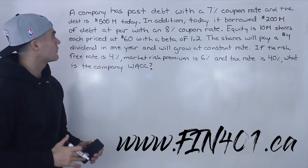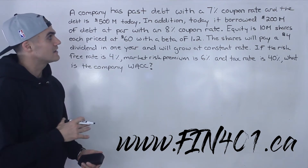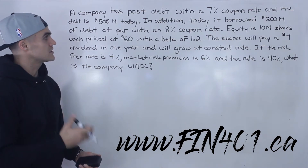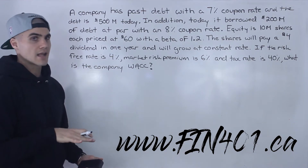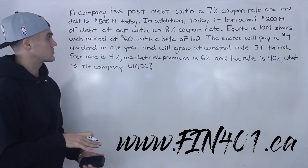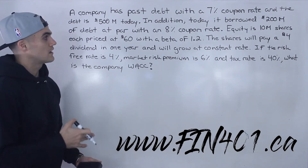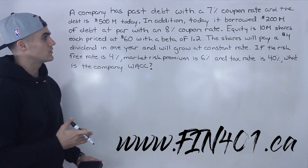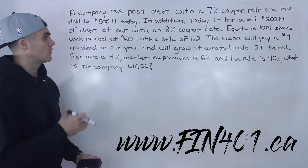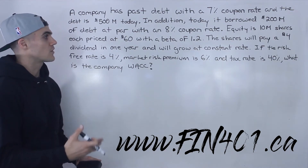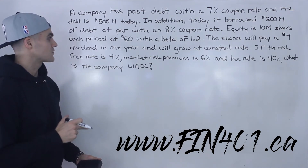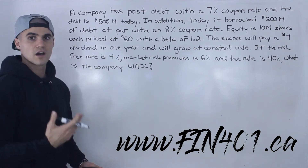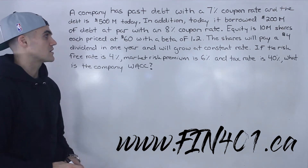So let's read what's going on here. We have a company that has past debt with a 7% coupon rate and the debt is worth $500 million today. In addition, today it borrowed $200 million worth of debt at par with an 8% coupon rate. Equity is 10 million shares, each priced at $60 with a beta of 1.2. The shares will pay a $4 dividend in one year and will grow at a constant rate. If the risk-free rate is 4%, market risk premium is 6%, and the tax rate is 40%, what is the company's weighted average cost of capital?